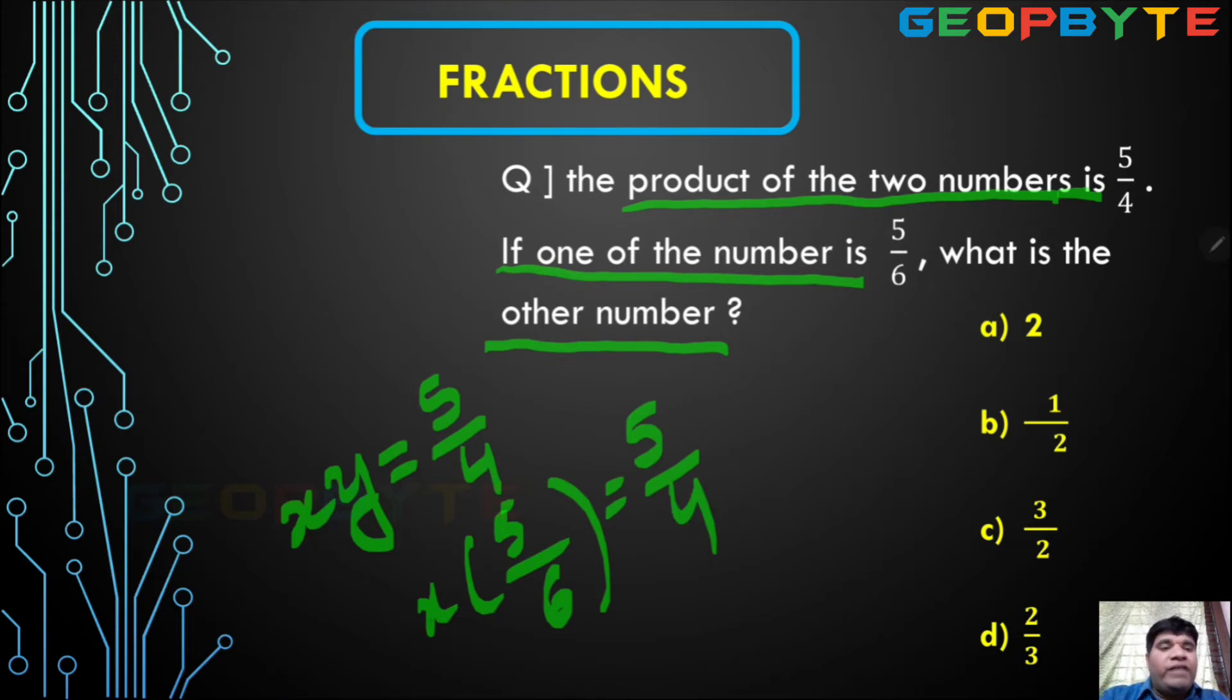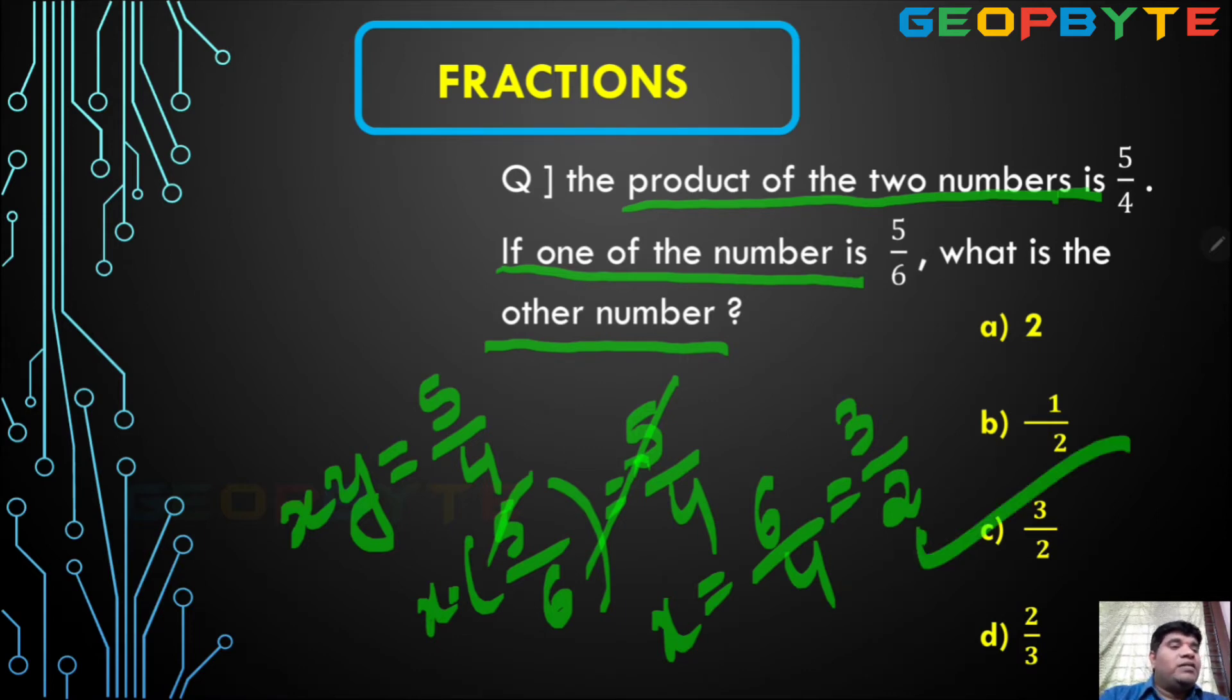Is equal to 5 by 4. Left side, right side. These completely multiplications. X into 5 by 6, right side 5 by 4. Both sides these numbers given. 5, 5 directly cancel. So 6 take right side. What is the output? X is equal to 6 by 4. So simplify this fraction. 2 threes cancel, 2 twos are cancelled. 3 by 2 is the final answer. Option C.